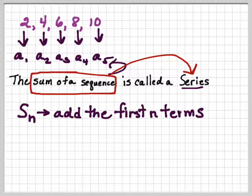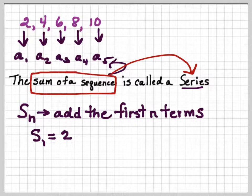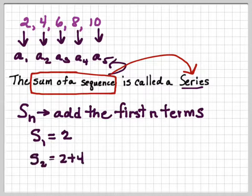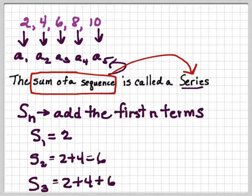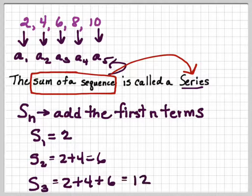So if I want to say add the first n terms of a sequence to give me a series, I would say S sub n. So S sub 1 would just be 2. S sub 2 would be 2 plus 4, the first two terms, which is 6. S sub 3 would be 2 plus 4 plus 6, which is 12.